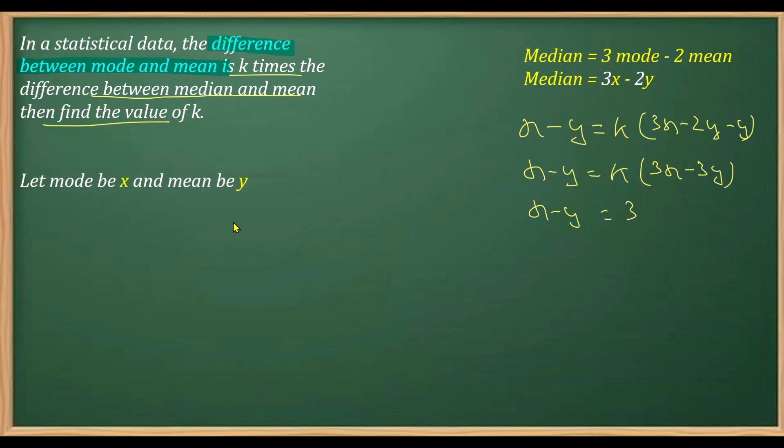Check here, this x minus y gets cancelled. So we are left with 1 is equal to 3k, that implies the value of k is what? 1 over 3. Well, this is how we will get the answer for this question.